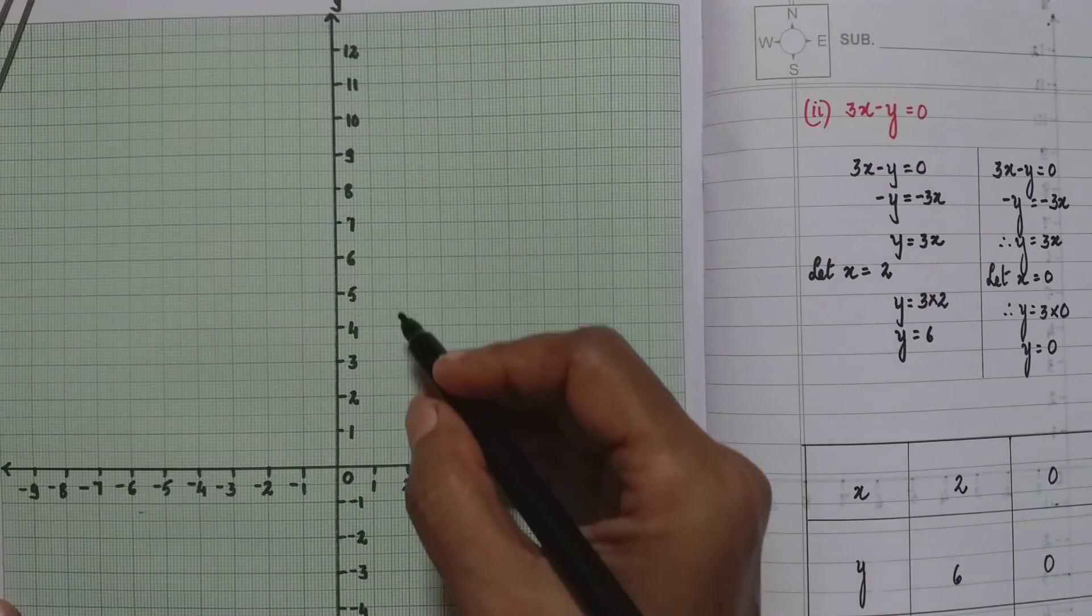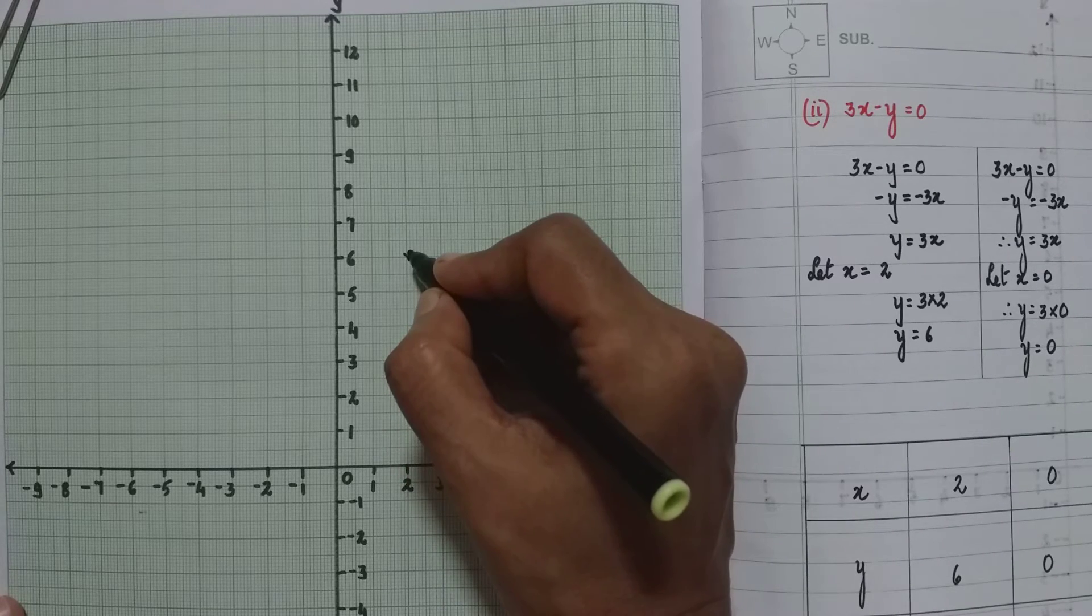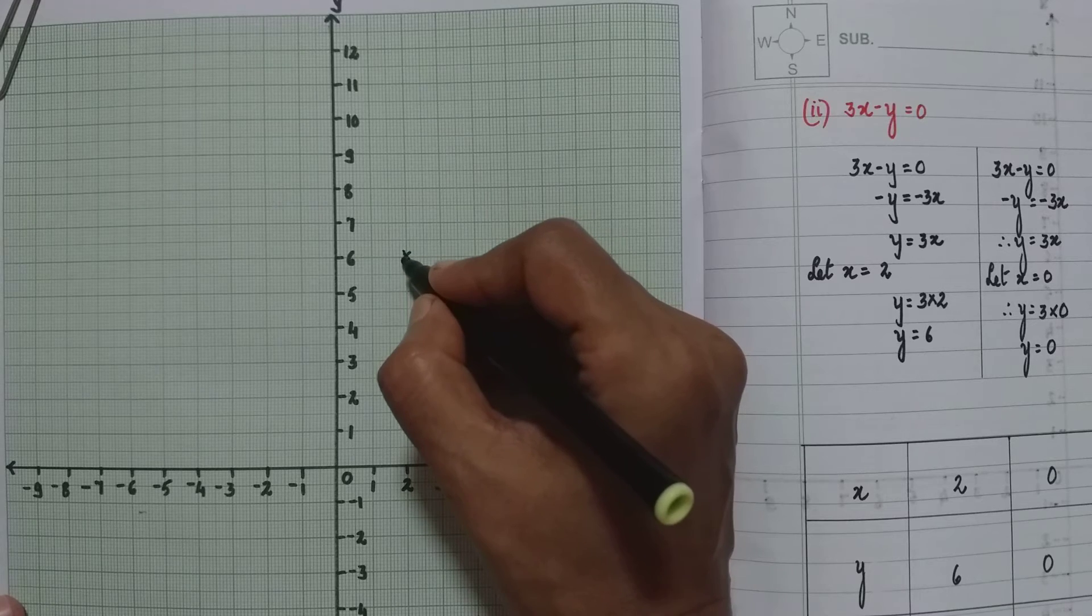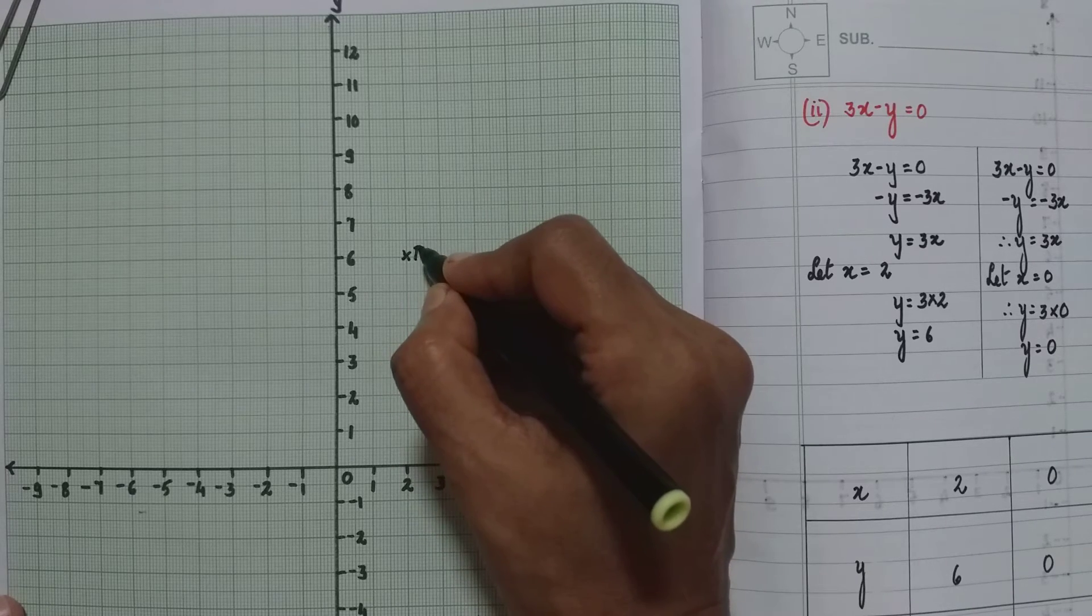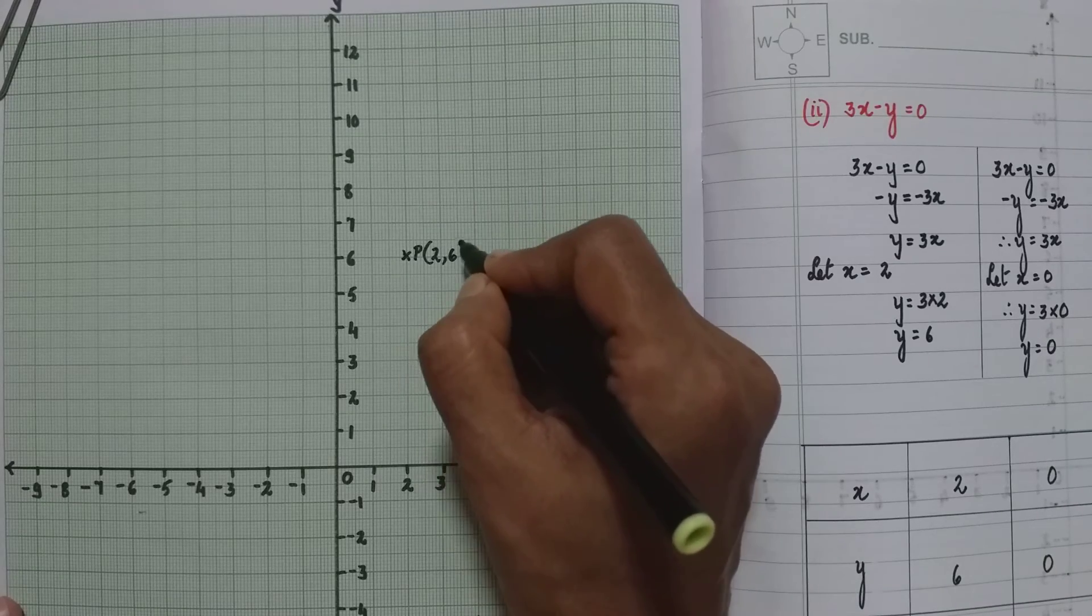So it will represent this point. We can name it any alphabet. Suppose I take P now here. So this will be 2, 6.